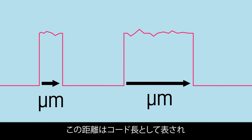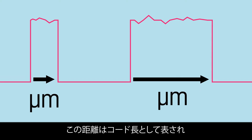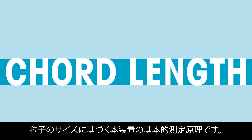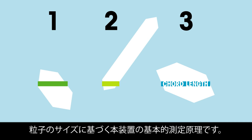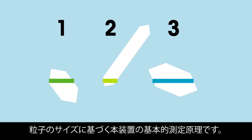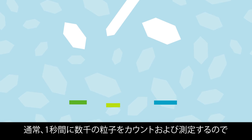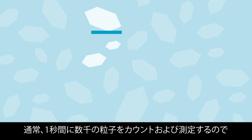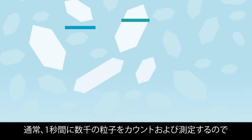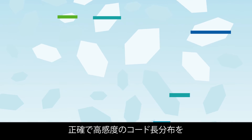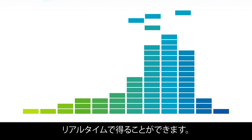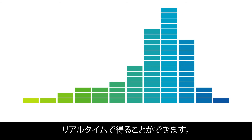This distance is defined as the chord length, a fundamental measurement of the particle related to the particle size. Typically thousands of particles are counted and measured per second, allowing a precise and highly sensitive chord length distribution to be reported in real time.